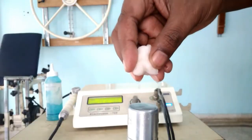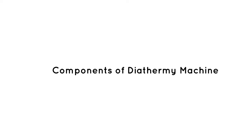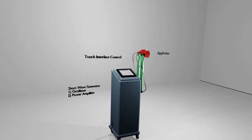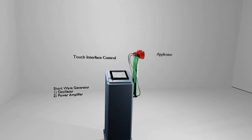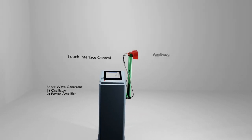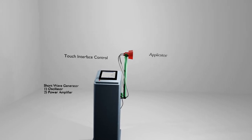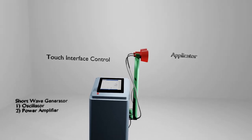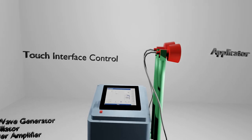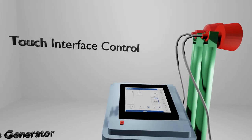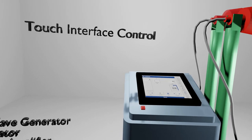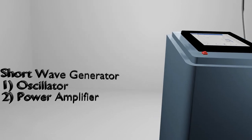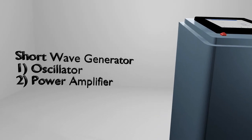All shortwave diathermy units contain three parts: the oscillator, the power amplifier, and the applicator. The oscillator, not unlike one found in a radio transmitter, generates the 27.12 MHz or 13.56 MHz signal that the power amplifier boosts. The oscillator usually employs a timer to control the duration of treatment. The power amplifier boosts the oscillator's output to therapeutic levels, and its circuitry contains a means to adjust the output power along with a meter or other output power indicator.